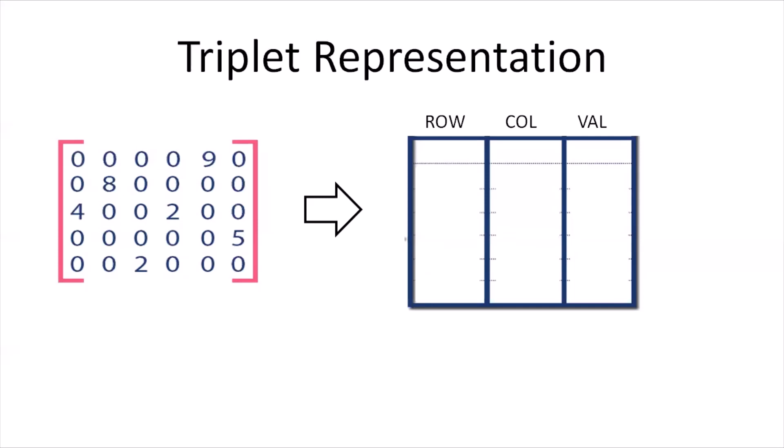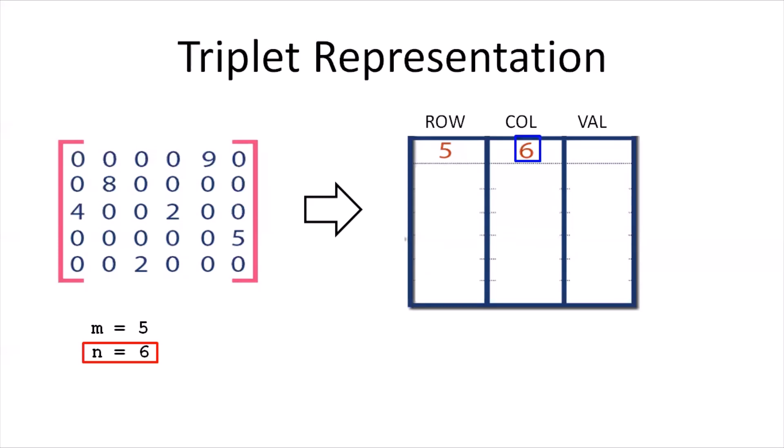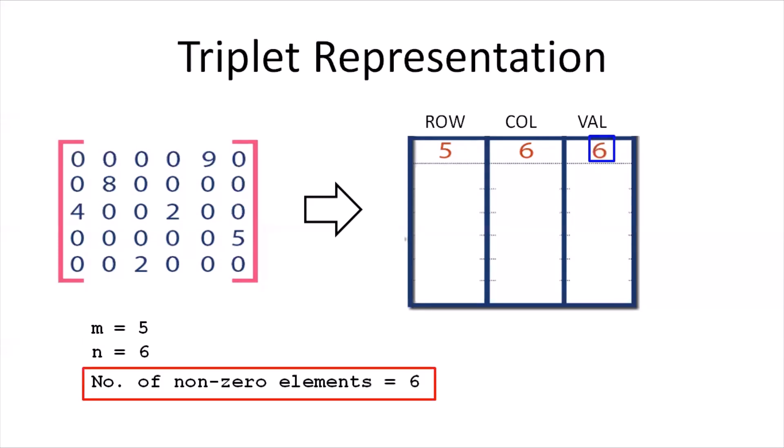In this case, the size of the original array is five-cross-six — five rows and six columns. Accordingly, the value five, indicating the number of rows, will go to the zeroth column of the triplet representation. The number of columns, six, will go to the first column. Since the matrix has six non-zero elements, the value six will go to the second column of the triplet representation. The rest of the rows will store details about the non-zero elements.